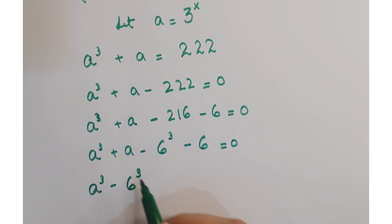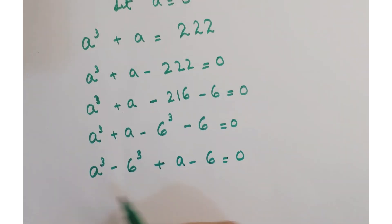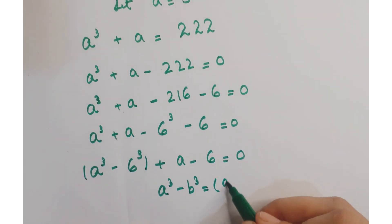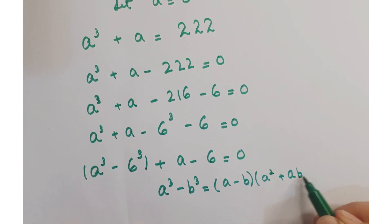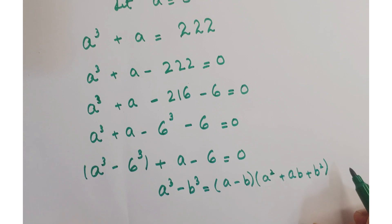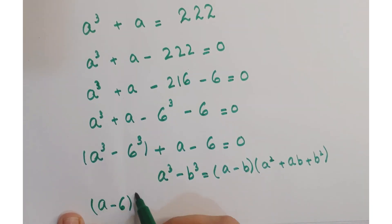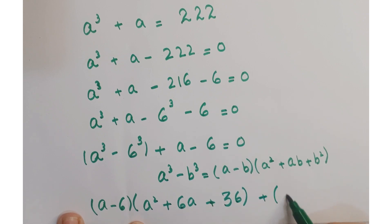Rearranging the equation as a cube minus 6 cube plus a minus 6 is equals to 0. Here we'll apply the algebraic identity that a cube minus b cube is equals to a minus b into a square plus ab plus b square.